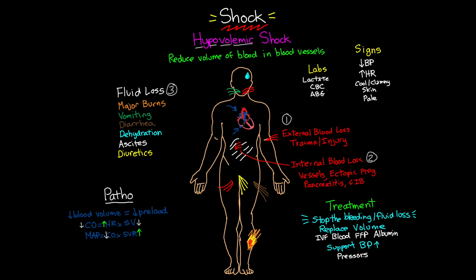That is our review of hypovolemic shock — the reduced volume of blood available to the body. We covered the causes leading to that state, the pathophysiology behind why we're in a shock state, and the telltale signs: low blood pressure, increased heart rate, and increased systemic vascular resistance, which are classic signs of hypovolemic shock. In a future lesson, after a deep dive into all types of shock, we'll summarize and look at ways to distinguish what type of shock your patient is in.